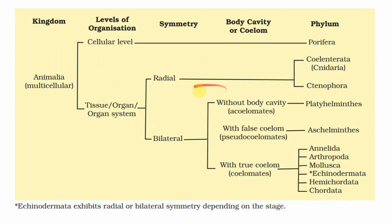This chart shows all the levels of organization, symmetry, body coelom, and the representative phyla for each basis of classification. Porifera has cellular grade of organization but no symmetry and no body cavity. Animals with tissue grade of organization, radial symmetry, and diploblastic nature are Coelenterata and Ctenophora. Organ grade of organization with bilateral symmetry, triploblastic but no body cavity — Platyhelminthes are the example.